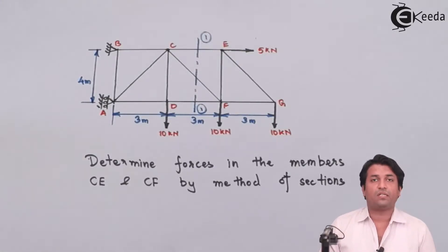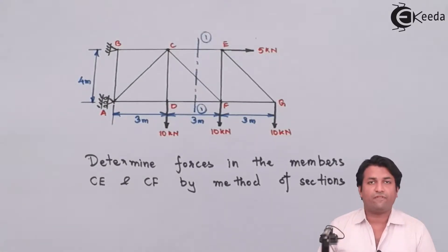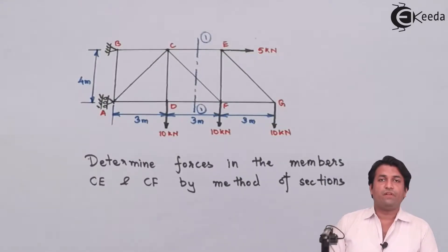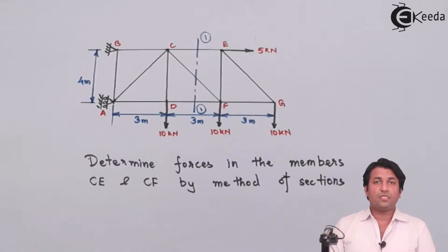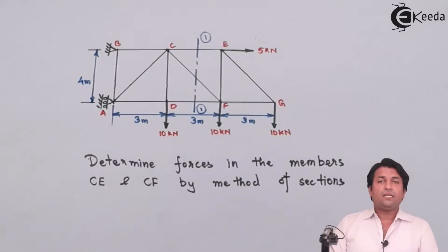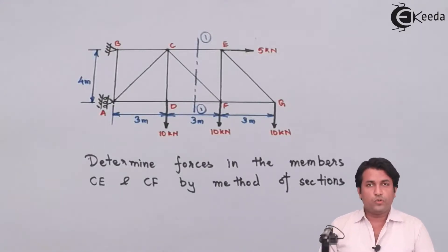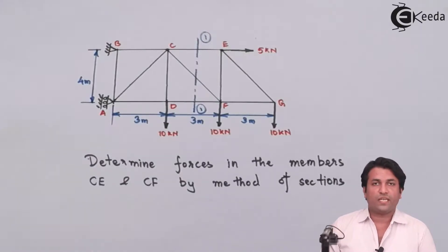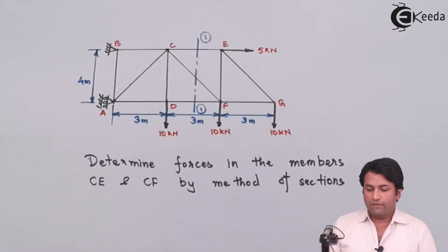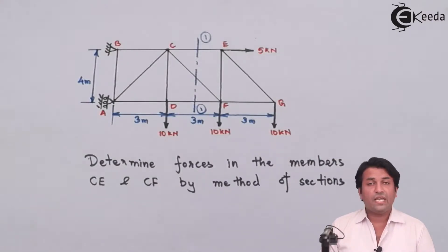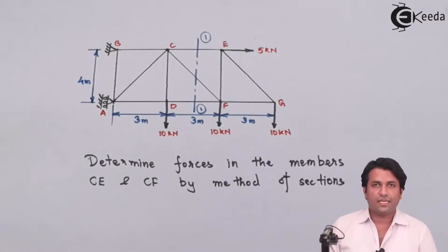As usual, the first thing we will be doing is finding out the stability criteria for the truss. Then we will move on to finding out the reactions, and then we are supposed to use the method of sections to find out the forces in members CE and CF.